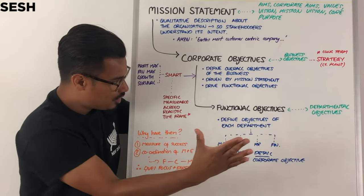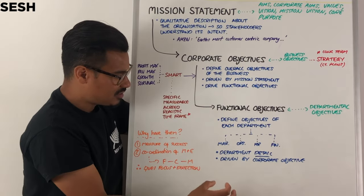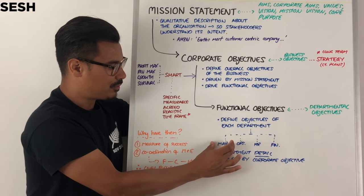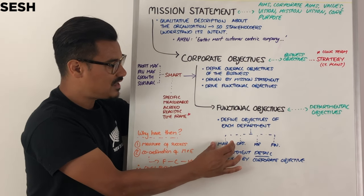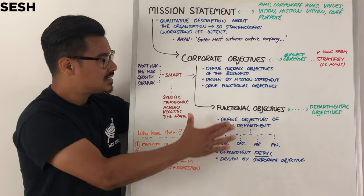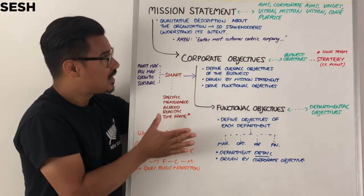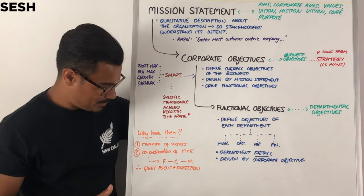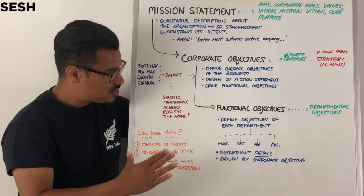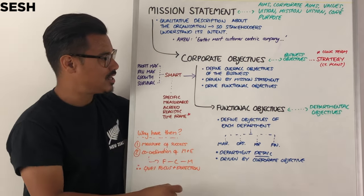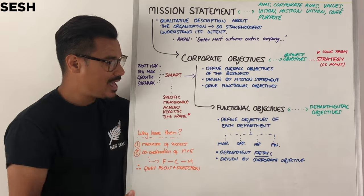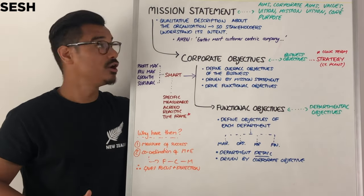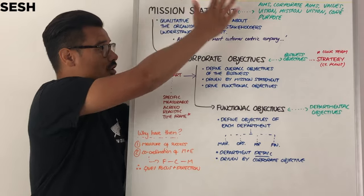Because you've got the functional objectives, employees in the marketing department can look to fulfil their objectives within their department, which fits in with the bigger system of the corporate objective, and clearly the end goal being the mission statement. So it gives focus and direction to employees and managers in their specific roles and specialisations, to help fulfil the broader definition of the organisation.